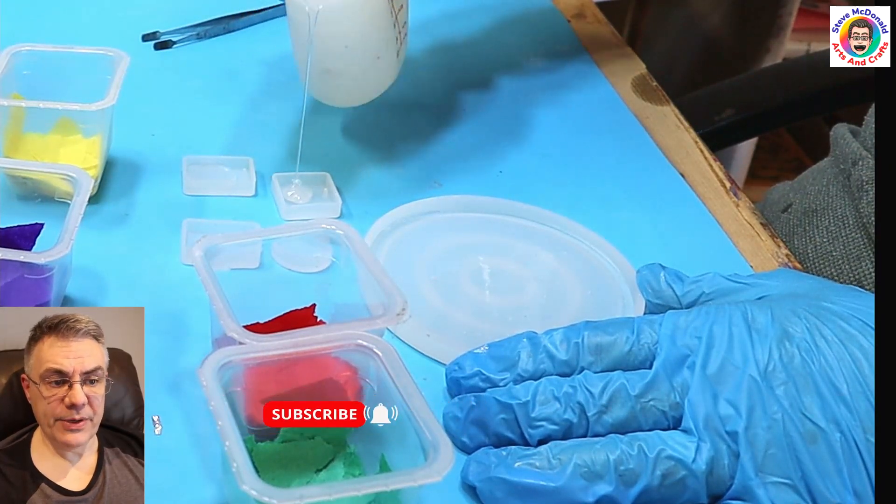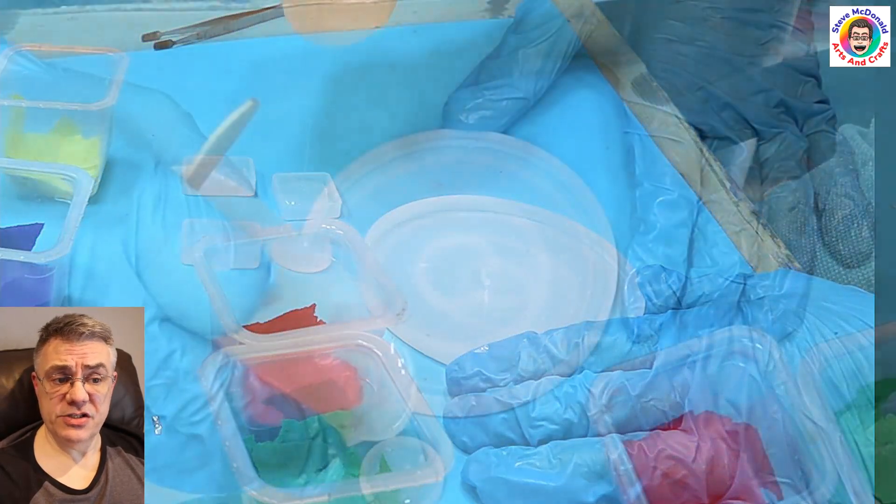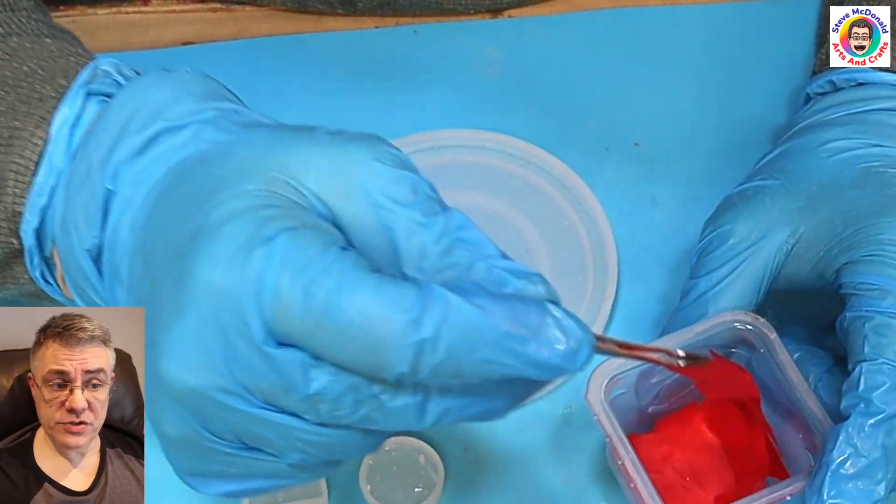So I'm pouring a little bit of resin into the bottom of each of these molds really to use as something to stick the tissue paper to so it doesn't keep flying around everywhere and also to give a layer.